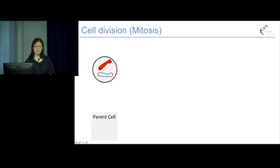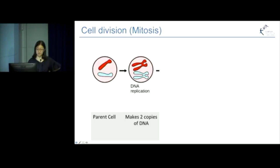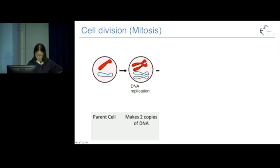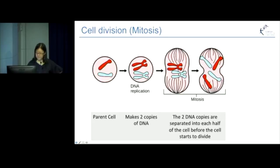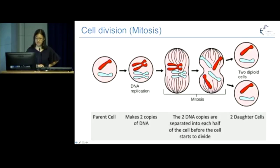This is a parent cell — a single cell that is getting ready to divide. The parent cell undergoes a process called DNA replication, where it generates two copies of its DNA. This is a critical part of the process because it needs to generate enough copies so that each of the daughter cells, each of the new cells, will get enough of the DNA material. The cell then reorganizes the DNA so it sits on two halves of the cell ready for division. Then once divided, you have two daughter cells — two new cells that should have exactly the same genetic material as the parent cell.